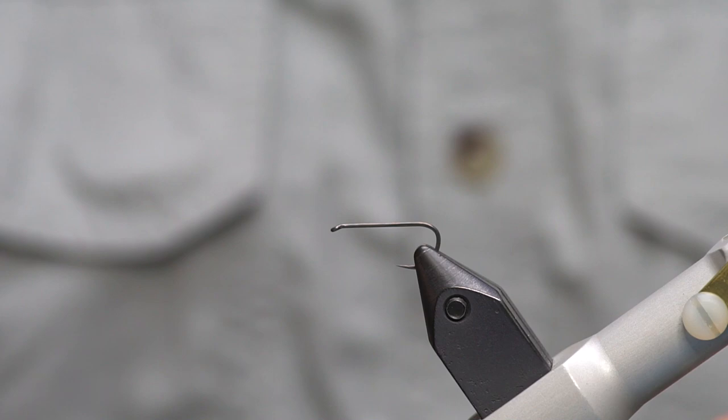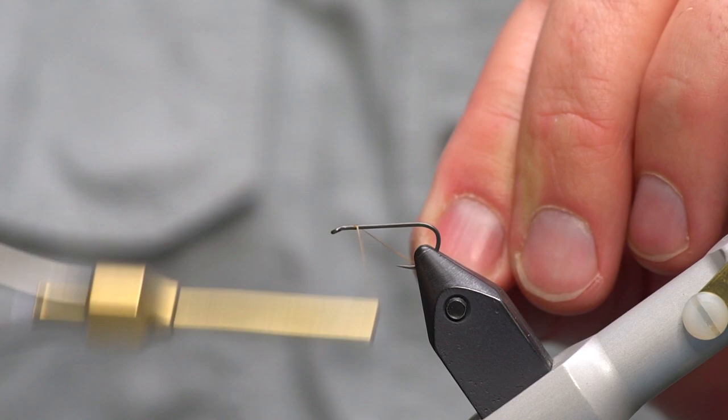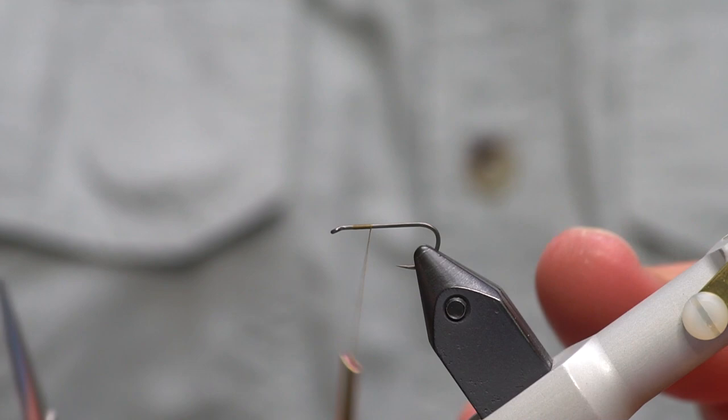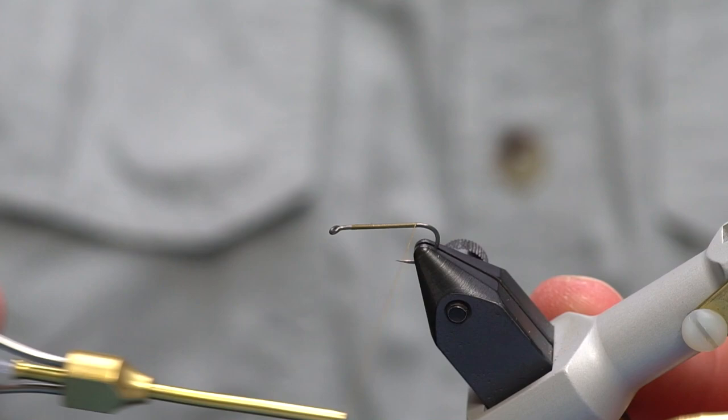We're going to use some of this Montana Fly Company light brown thread in 6 aught and we'll get started here. One thing to note about this nano smooth coat on this hook is that it's very slick, so sometimes starting the thread is a little more challenging than a normal hook because it just likes to slide back and forth. But if you use a little bit more tension and maybe a couple extra wraps to start the thread, you'll be good to go. So I'm just going to work the thread back towards the bend where I will then get ready to tie in our tube.